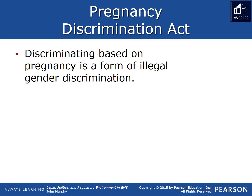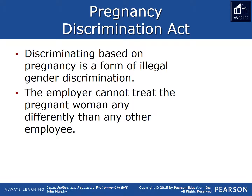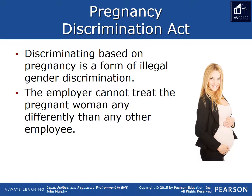Enacted in 1978, the Pregnancy Discrimination Act amended Title VII of the Civil Rights Act of 1964 to prohibit gender discrimination on the basis of pregnancy. Essentially, it is illegal for an employer to treat pregnant females differently than any other employee on the basis of their pregnancy. This means that an employer cannot remove a pregnant female from active work unless the woman can no longer perform the essential functions of the job. For an EMS agency, this means that the EMS manager cannot remove a pregnant female from active duty out of concern for the mother or her fetus — that is not the agency's call.